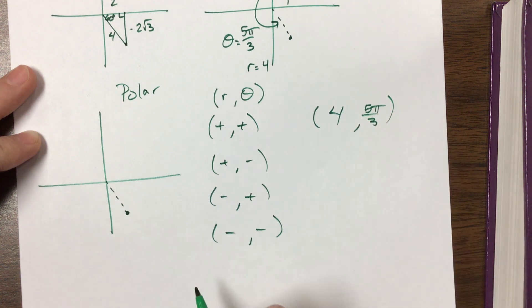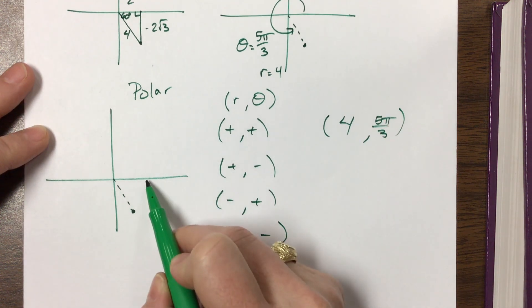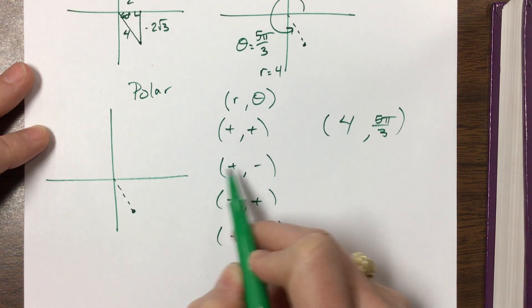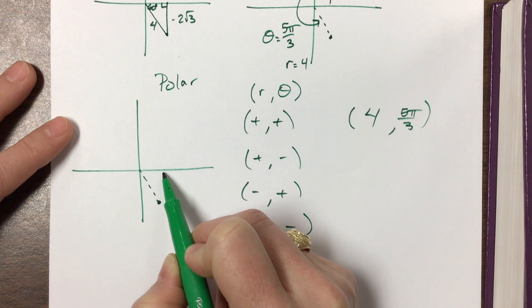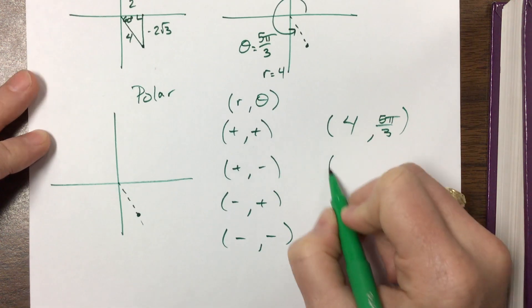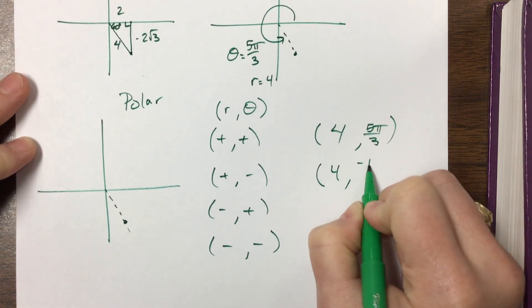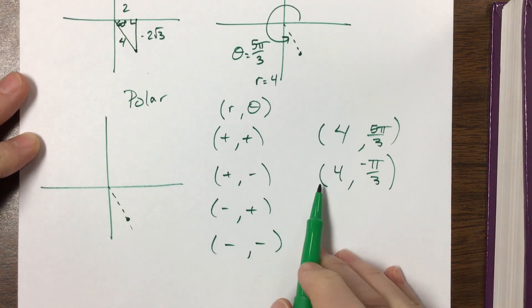If I have a positive negative, that means the angle is negative, the radius is still positive. So if I want the angle to be negative, that means I need to come this way and then stop at negative pi over 3 and then come down a positive 4r. So that's a positive 4r and a negative pi over 3.